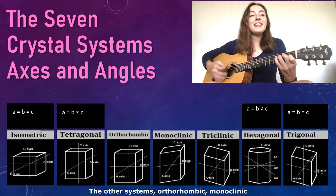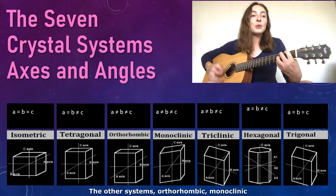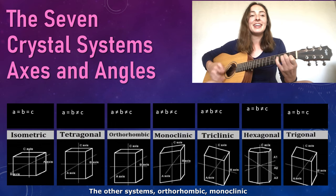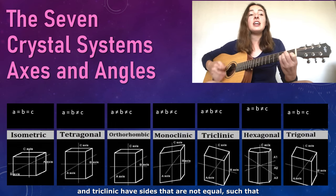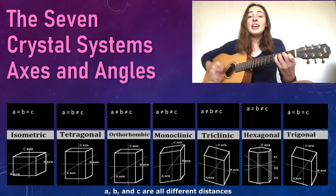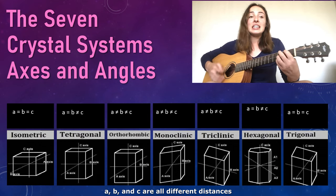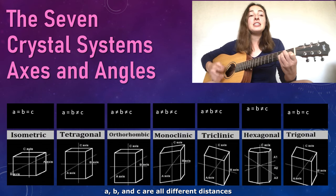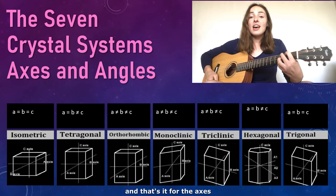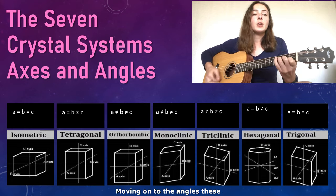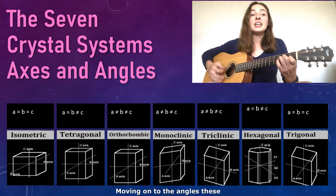The other systems—orthorhombic, monoclinic, and triclinic—have sides that are not equal such that a, b, and c are all different distances. And that's it for the axes.